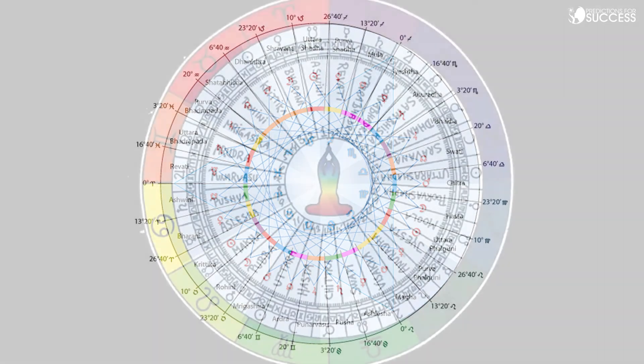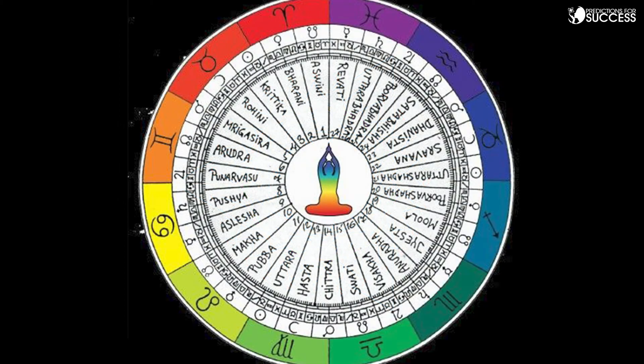There are 27 nakshatras, as we have mentioned, and every nakshatra carries certain attributes inside.